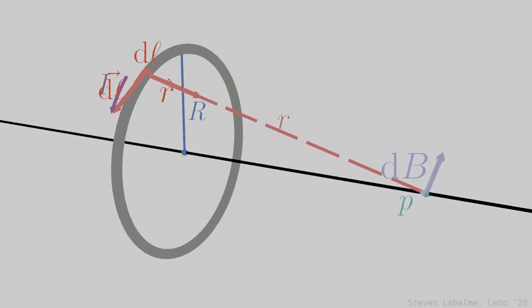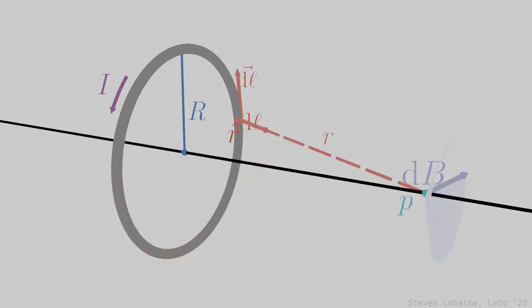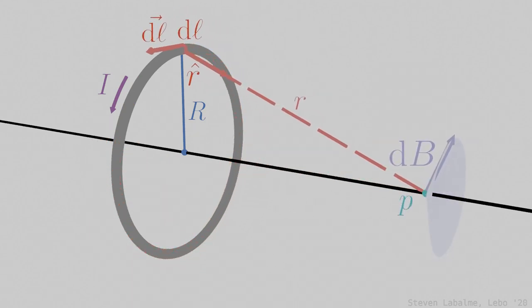As other dl's and their respective dB's are considered, a cone of vectors is created. When all of these vectors are added together, their radial components cancel, leaving only the final vector Bx, which conveniently points along the x-axis.